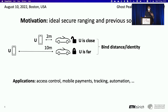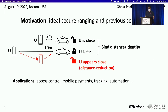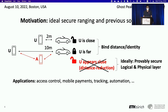If the user is close, then you can grant access. If the user is far, then you don't grant access. In this scenario, we care about an attacker that is able to trick the two devices to believe that they are close and therefore gain access illegitimately. This is called a distance reduction attack. Ideally, a secure ranging protocol should be provably secure against both logical layer and physical layer attacks.